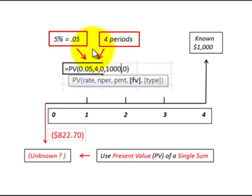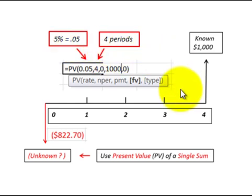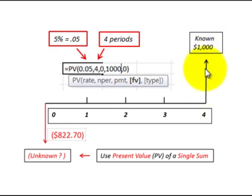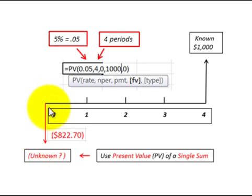Four periods would be four years since it's a five percent interest rate per year. Let's look at our first cash flow diagram, where we have a known amount at the end of year four. That's our future value, and we want to discount it back to its present value — what is it worth here at the beginning of year one? That's the unknown amount.